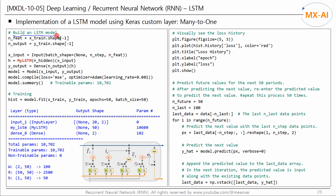Now let's build an LSTM model. Create an input layer — the input layer will receive 3D data. The first dimension is the batch size, the next dimension is 20 (the number of time steps), and the last dimension is 2 (the number of features in the input data). Next, we create a recurrent layer using the class we just created above. Initiate the MyLSTM class by entering the number of neurons, then feed X input into the class. This class returns the final H. Finally, we create an output layer with 2 neurons. The final output H of the recurrent layer is fed into the output layer, using the linear activation function.